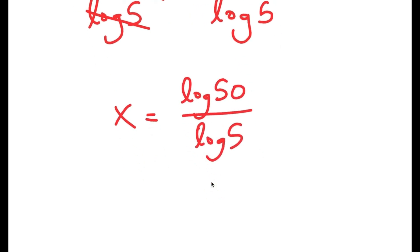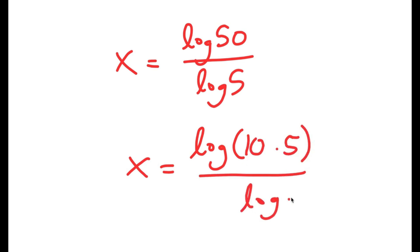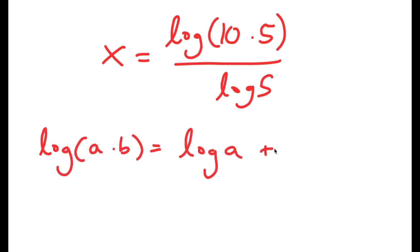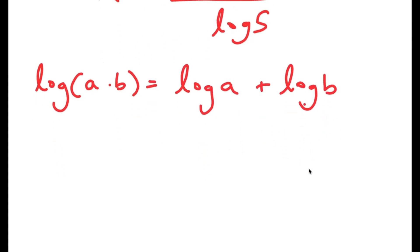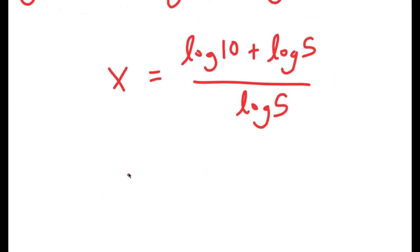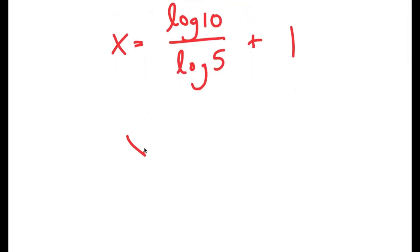Let's simplify this a little. Log 50 is the same thing as log of 10 times 5. Another property of logarithms is that if I have log of a times b, this is equal to log a plus log b. So this turns into log 10 plus log 5 over log 5, which is the same as log 10 over log 5 plus 1. And log 10 is equal to 1, so I get x equals 1 over log 5 plus 1.